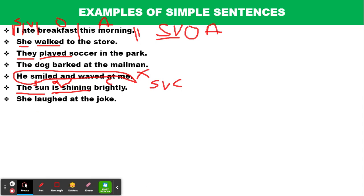One key feature of a simple sentence is that it expresses one complete idea. 'He smiled and waved at me' expresses two ideas — 'smiled' is one idea and 'waved' is another. In contrast, 'She laughed at the joke' is a simple sentence expressing just one complete idea.